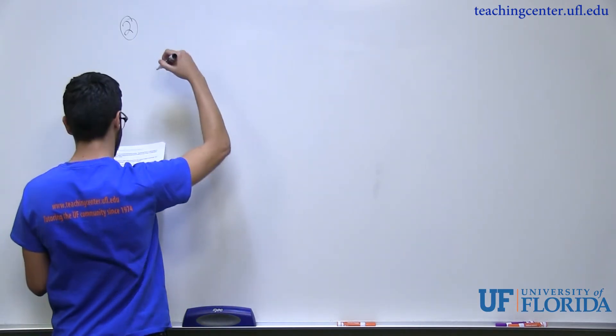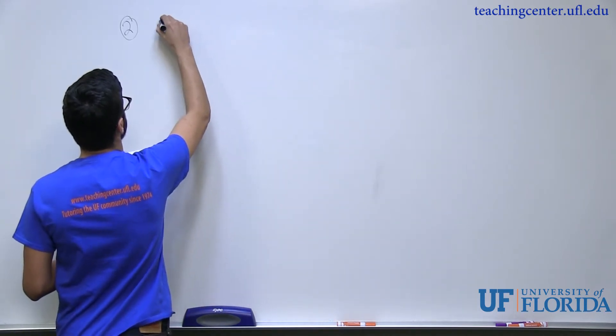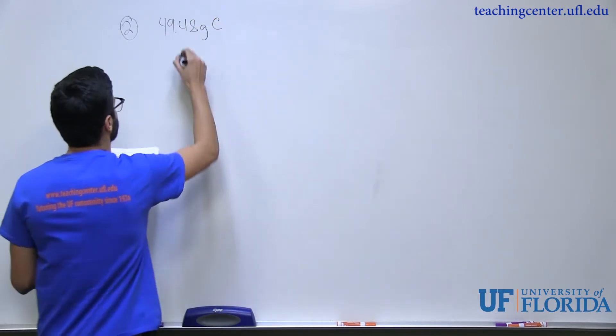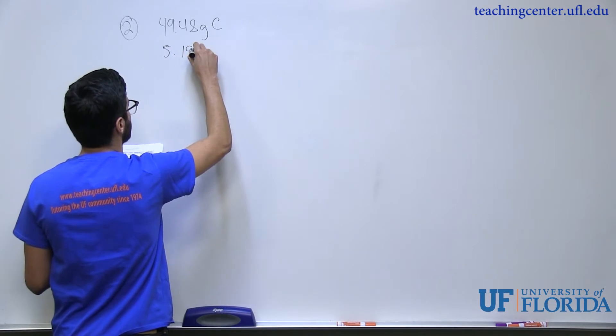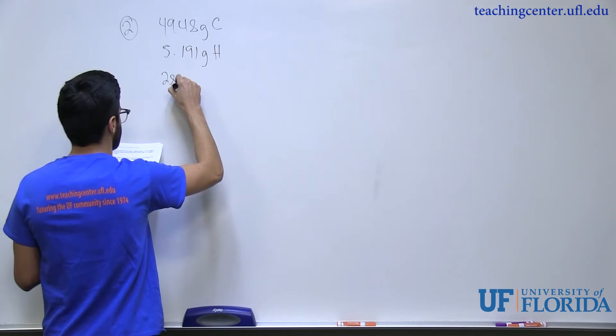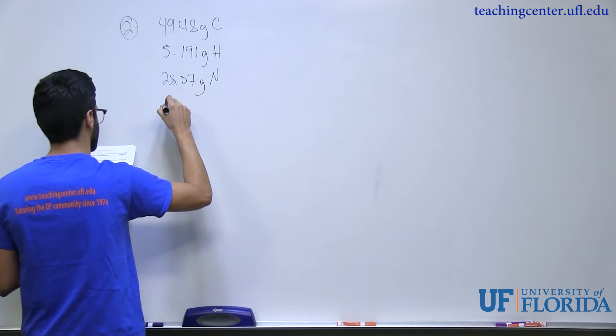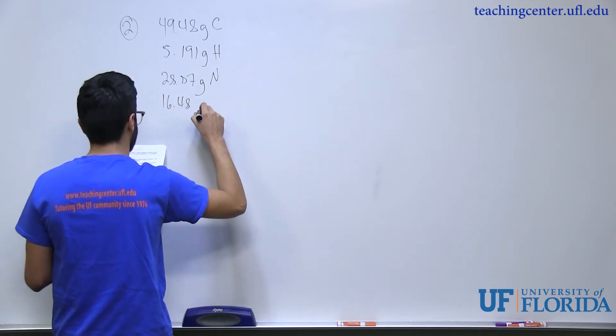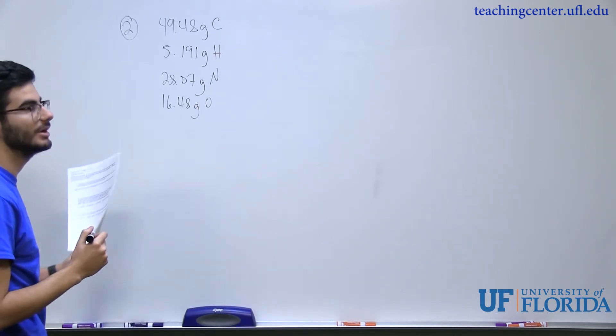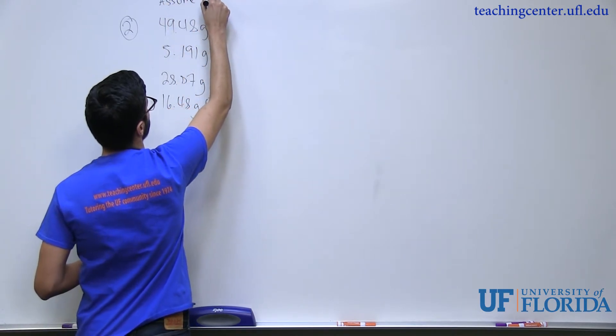Because if I do that, then 49.48% of carbon in 100 grams is just 49.48 grams. So we can say we have 49.48 grams of carbon, 5.191 grams of hydrogen, 28.87 grams of nitrogen, and 16.48 grams of oxygen. All these will add up to 100 because I assumed 100 grams.